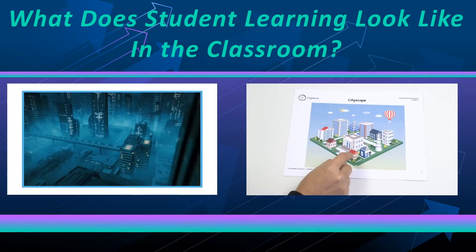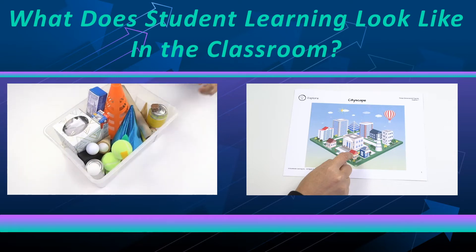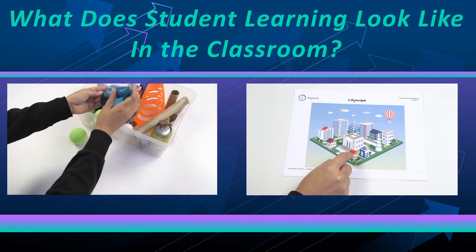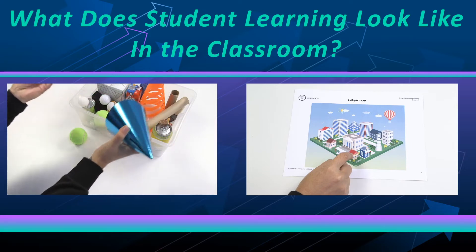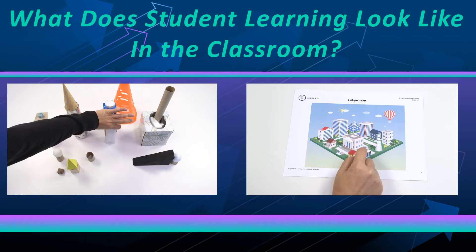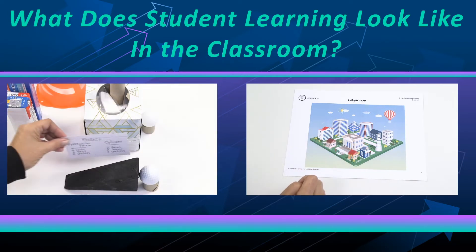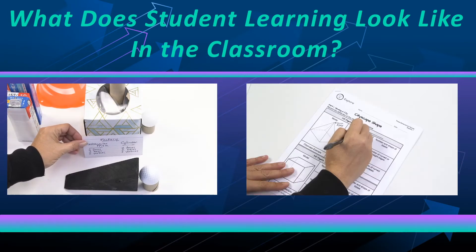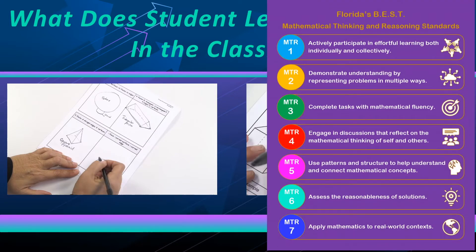What does student learning look like in the classroom? When building vocabulary about 3D shapes it is important for teachers to allow students to have hands-on real-world experiences with these figures. They should have opportunities to identify and sort the figures based on their attributes, then become fluent with the vocabulary through multiple examples and scenarios. These are examples of MTRs 1 and 7.